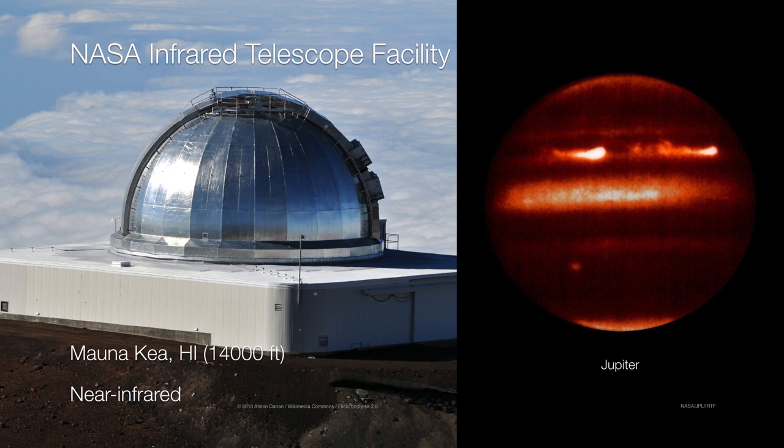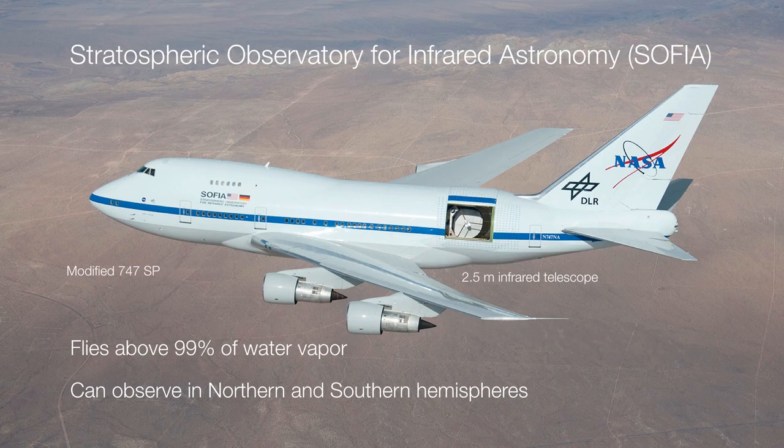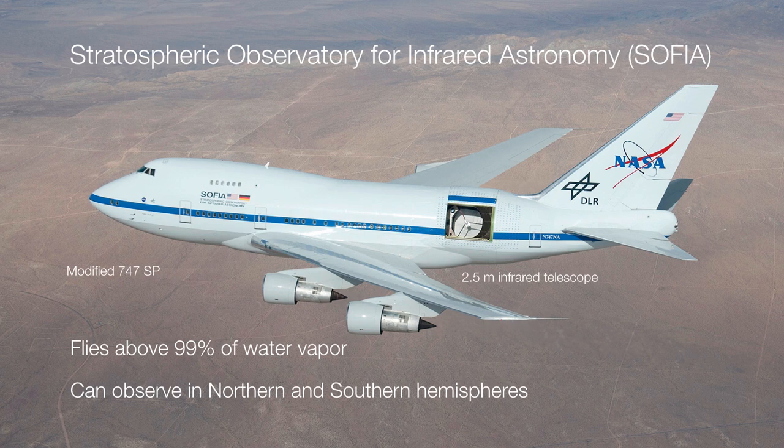But to get a little bit farther into the infrared, you need to get above even more of the water vapor. And so that's why this telescope is located in the back of a modified 747. This is SOFIA, or the Stratospheric Observatory for Infrared Astronomy. It's a 2.5-meter telescope, so it's fairly modest. But because it is able to fly above 99% of the water vapor in the atmosphere, it can see deeper into the infrared. And best of all, because it's in an airplane, it can be deployed to the southern hemisphere to conduct observations of that part of the sky, or farther north to catch more of what's going on in the northern hemisphere. So it's an infrared telescope that can be located anywhere on demand, which is a really nice capability to have.